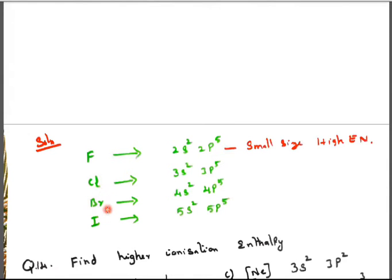So fluorine, chlorine, bromine, iodine - 2s² 2p⁵, 3s² 3p⁵, 4s² 4p⁵, 5s² 5p⁵. Smallest size means will have the very very high electronegativity band.